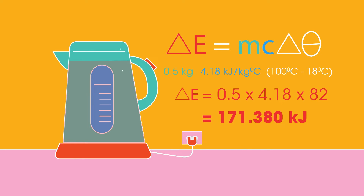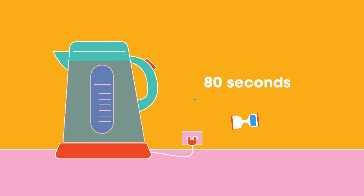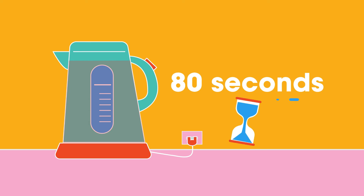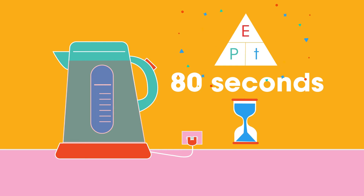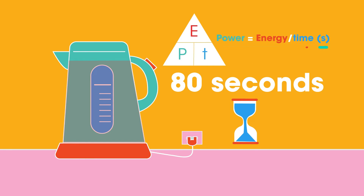Heat and sound will be lost to the surroundings. If this kettle took 80 seconds to boil, then we can begin to estimate the power of the kettle. Power is the rate at which energy is transferred: power equals energy over time.